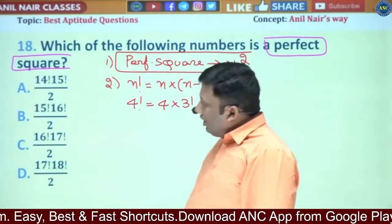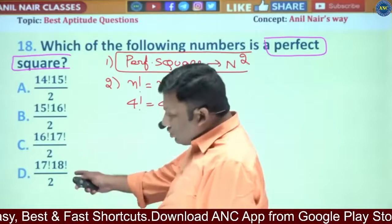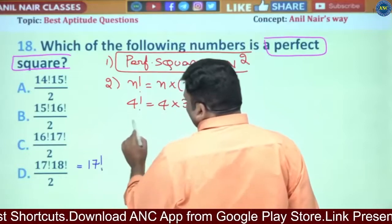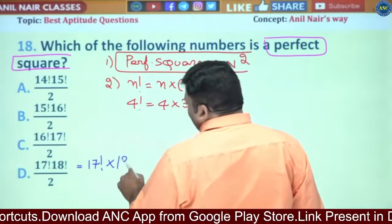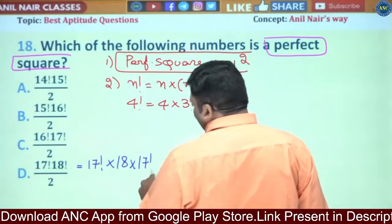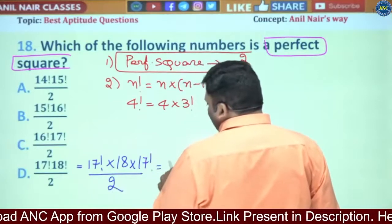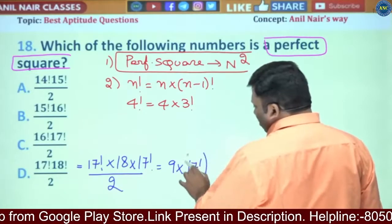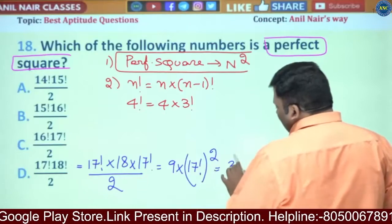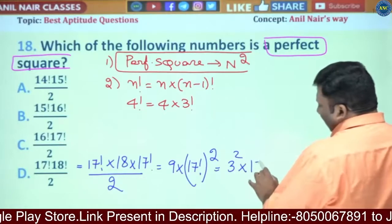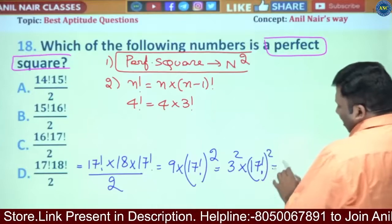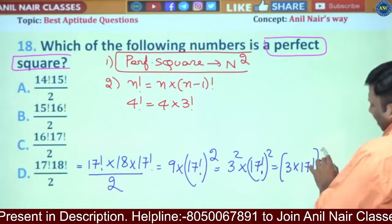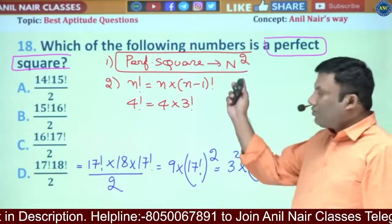The question is: which of 14!×15!, 16!×17!, 17!×18! divided by 2 is a perfect square? Let us work from the bottom up. 17! × 18! divided by 2: 18! can be written as 18 × 17!. So we get 18 × (17!)² divided by 2, which is 9 × (17!)². Since 9 = 3², this becomes (3 × 17!)².